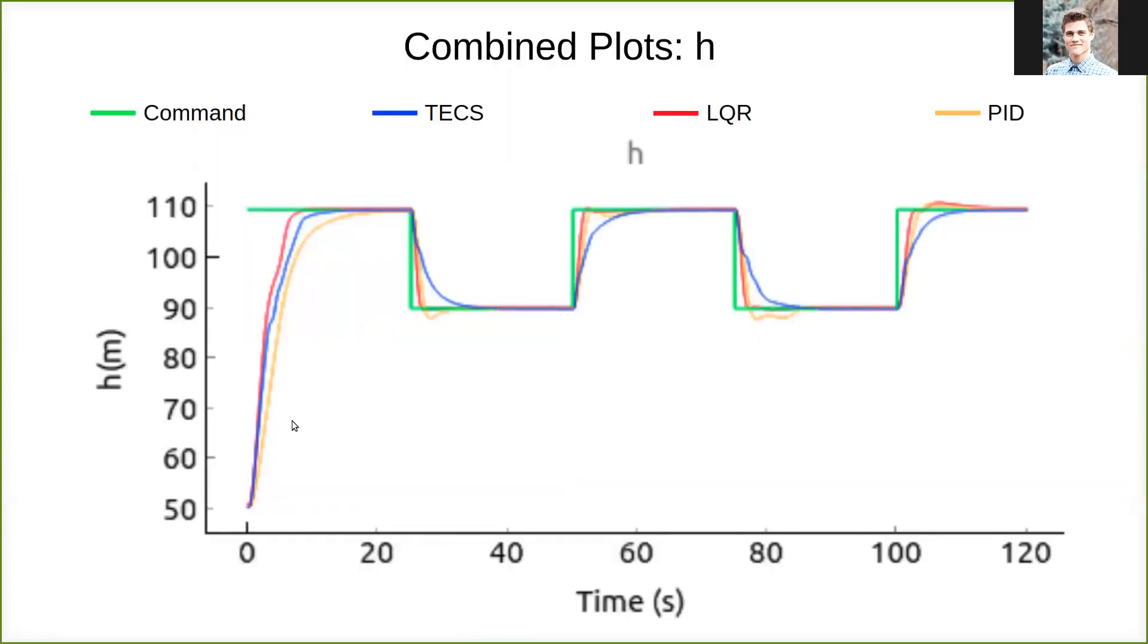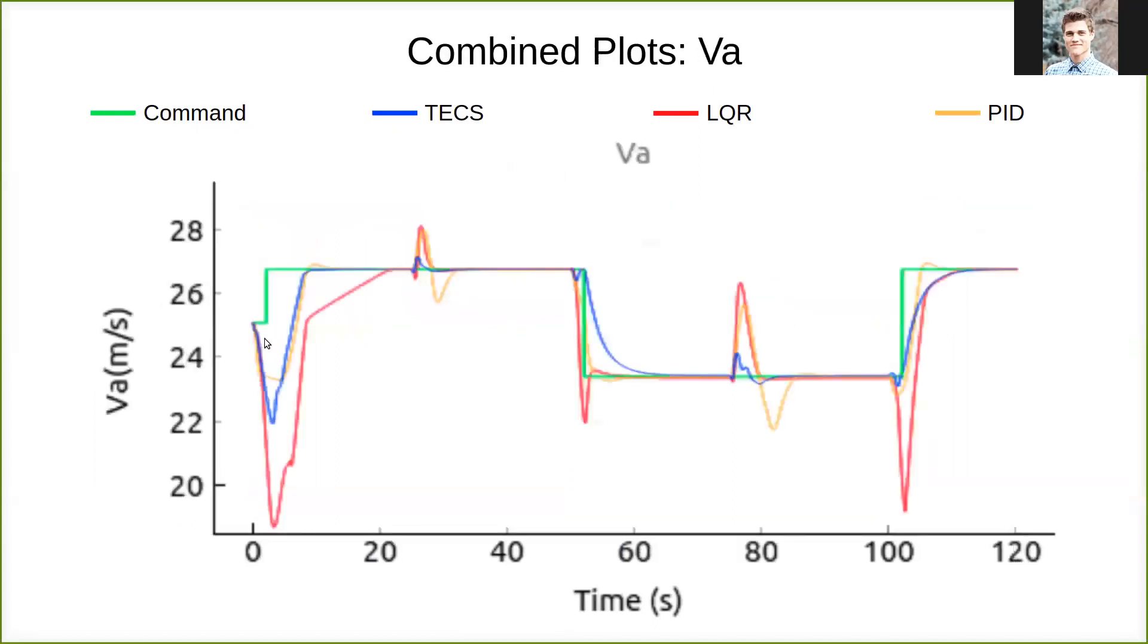If we overlay all these plots, you can see that the total energy control is very comparable to the others. These have a little overshoot, but they're still able to converge around the same time. But the difference in airspeed is quite significant. As you can see, it's a significant drop for all of these transition states compared to LQR and PID.